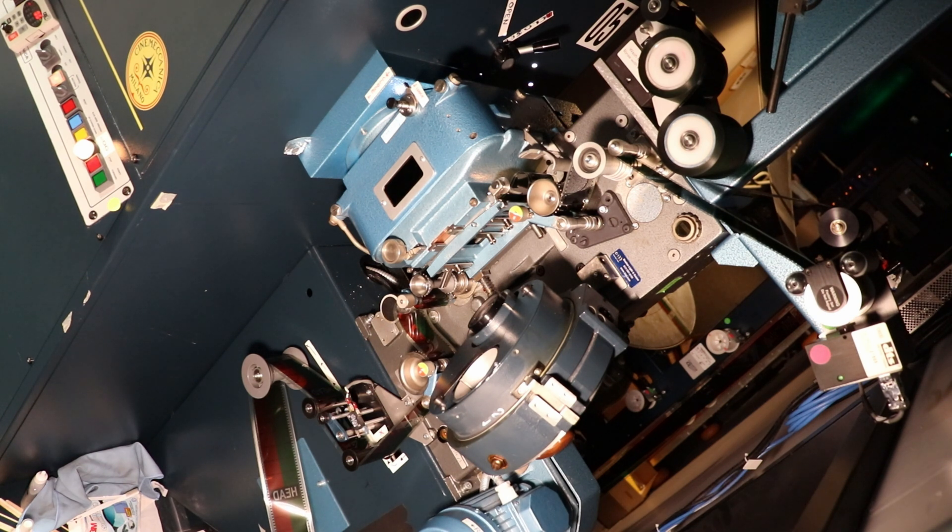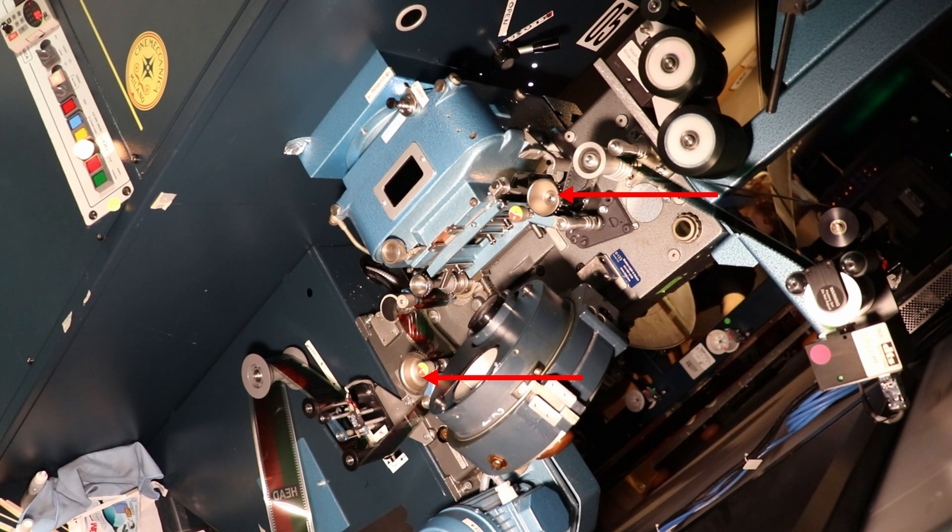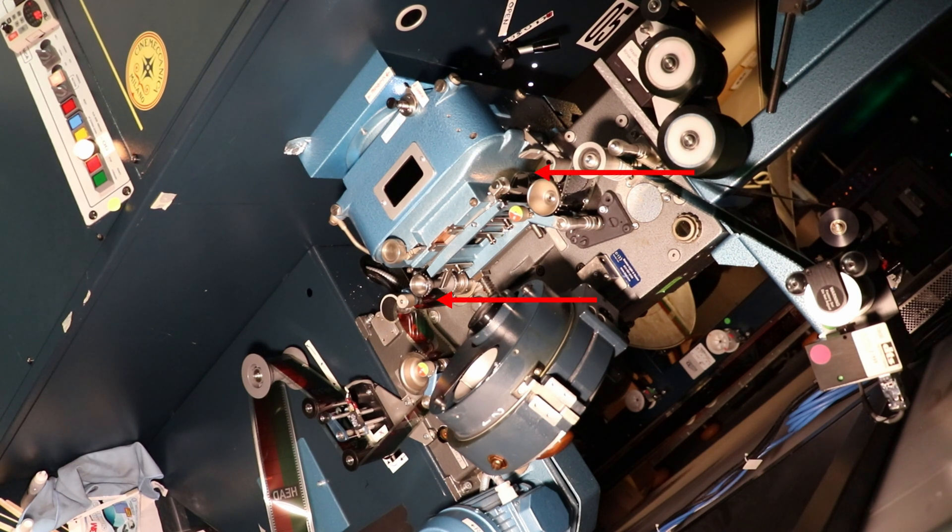Now, we need an intermittent motion for the image, but for just about everything else, we really want constant motion on the film. There's constant motion sprockets on the projector, which spin at a constant speed, but we need a buffer between the intermittent and constant motion, or we'll just destroy the film.